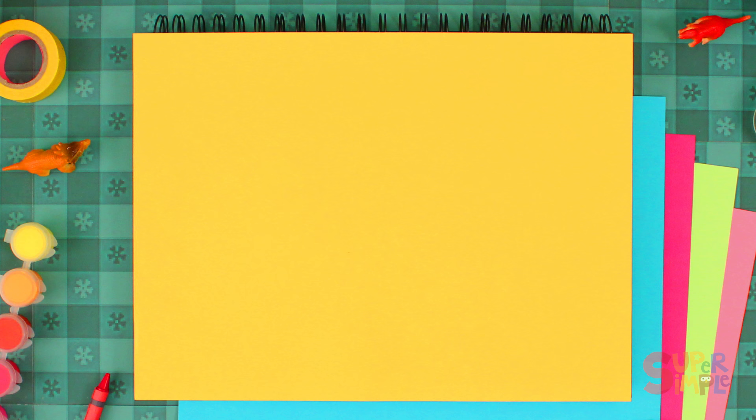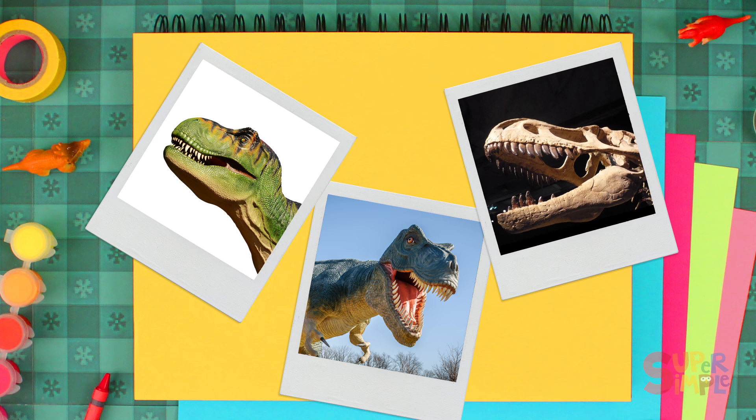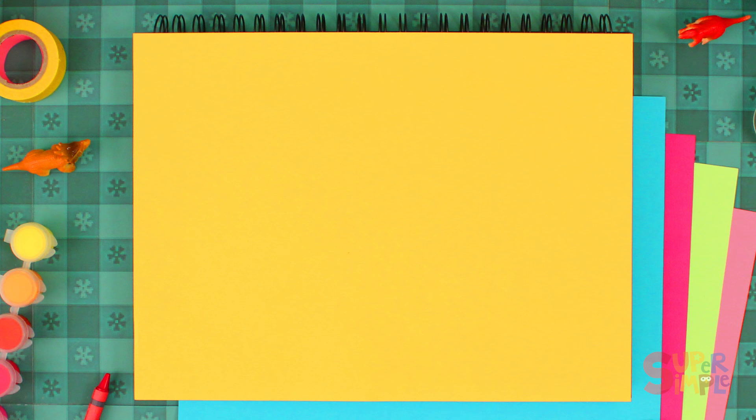Today we're going to draw a Tyrannosaurus Rex. We'll start with a big oval for her head.